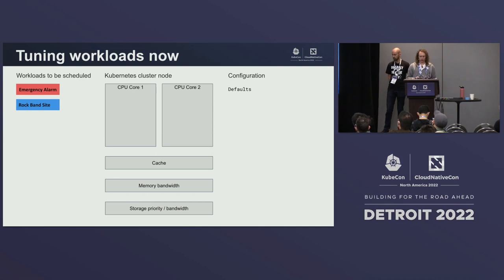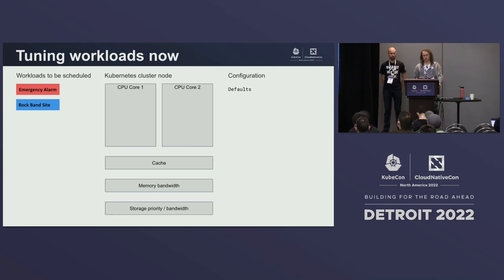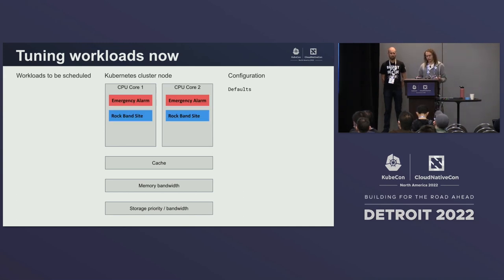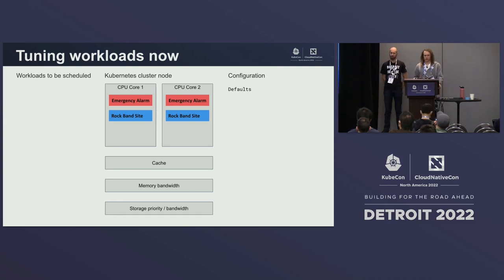Imagine a scenario where we have an emergency alarm system that must be fast and reactive to natural disasters, and a rock band website handling tour dates and ticket sales for a popular band. Without trying to separate those two, they would share most resources — memory, CPU — and end up on the same CPUs. If the rock band website has a traffic spike, the emergency alarm might get interrupted, which is not good. We want the emergency alarm to be isolated.